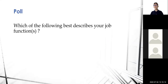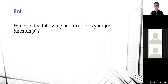Now I have another poll question: which of the following best describes your current job functions? Options include physical security — such as security operations or security systems integration — personnel security, and others. You can select multiple options since many of us wear multiple hats. Looking at the responses coming in — about 8 out of 12 responses so far.